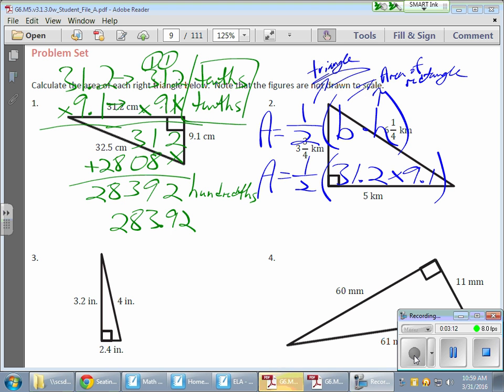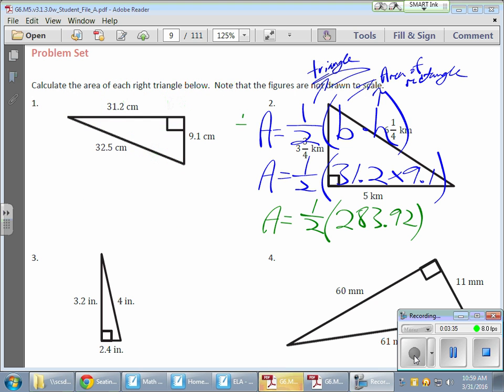So here's my value after, or my product, after multiplying. Let's see, 283.92, and I want half of that value. And if I want half of that value, the best way to take care of that is to divide it by 2. Let me do that in red.